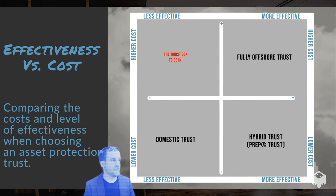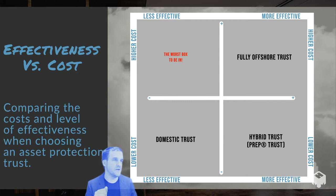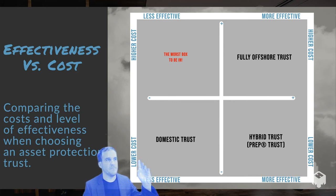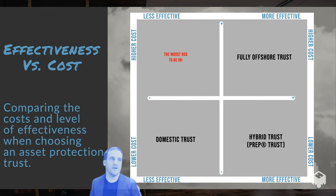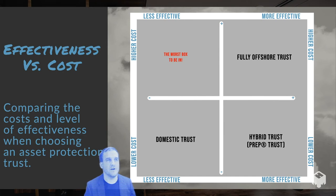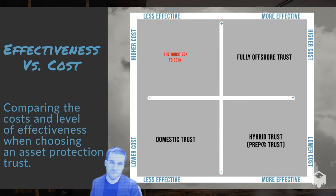Effectiveness versus cost — comparing the cost and level of effectiveness when choosing an asset protection trust. We have our axis here with effectiveness going along the horizontal line: less effective to the left, more effective to the right versus cost. Higher costs going up top on the vertical line and lower costs going down.